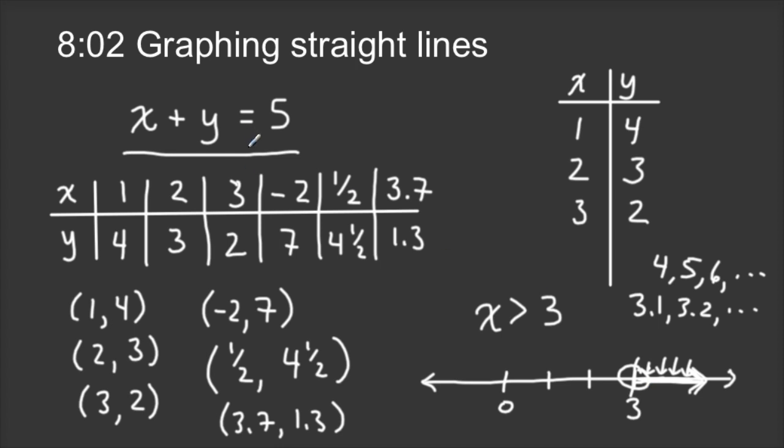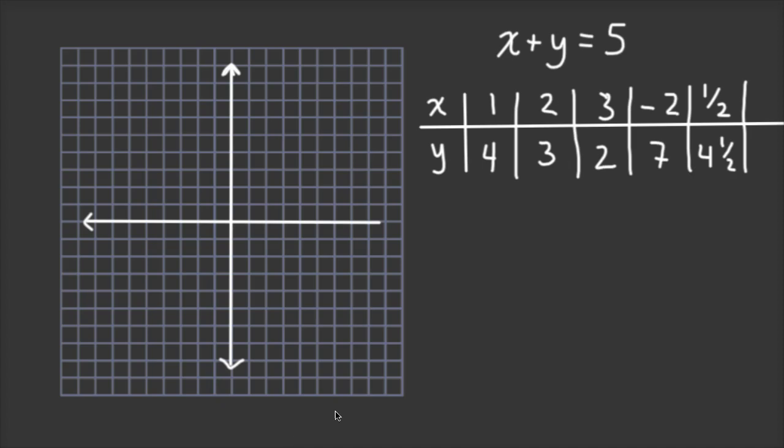For X plus Y equals 5, we're going to do something similar, but we need a two-dimensional graph, what we call a coordinate plane, because we have two variables. So I need a number line for each variable. If we graph all of the points we got as solutions on this coordinate plane, you will see a pattern. The X values we'll put on the horizontal number line, and the Y values we'll put on the vertical number line.